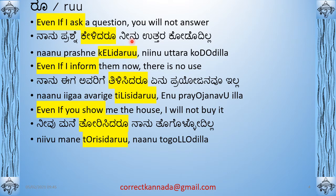For all pronouns — nanu, neevu, avanu, avalu, avaru, adu — everything will be 'kododilla'. Next: 'Even if I inform them now, there is no use' — nanu eega avarige tilisidaru yenu prayojanavilla. These are called clitics. A clitic is a concept of extending the last letter of a word to express a certain emotion. 'Prayojanavilla' — the 'vu' is added to give the emotion of helplessness, meaning you have exhausted all possibilities, there is no use. That 'vu' is a clitic here.